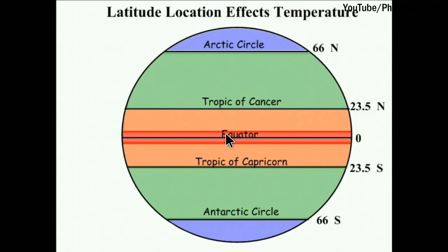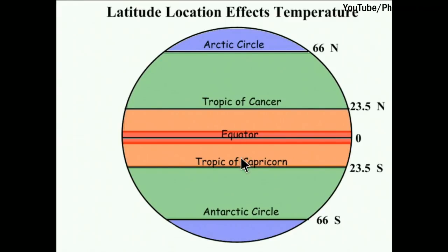The equator is at zero degrees. At 23.5 degrees north is the Tropic of Cancer. The region between the Tropic of Cancer and Tropic of Capricorn is called the Torrid zone, also known as the Tropical zone — it receives the most sun rays. Moving away from the equator into the temperate zone, less heat is received and temperature is lower. Near the Arctic Circle and Antarctic Circle, temperature is very low, so seawater there is also cooler.